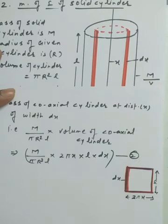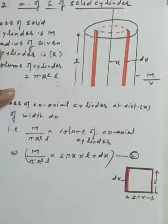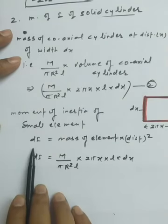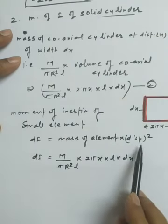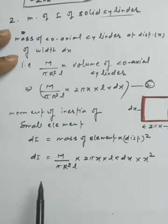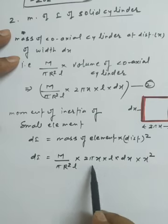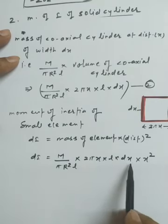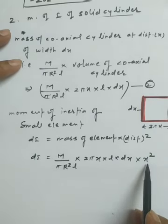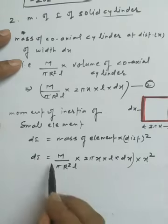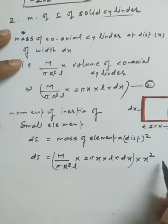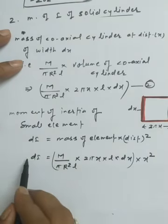Using this as equation two, we apply the moment of inertia formula for a small element: dI = dm times distance squared. So dI equals (M divided by pi R² l) times (2 pi x times l times dx) times x squared. This accounts for both the mass of the element and its distance x from the axis of rotation.